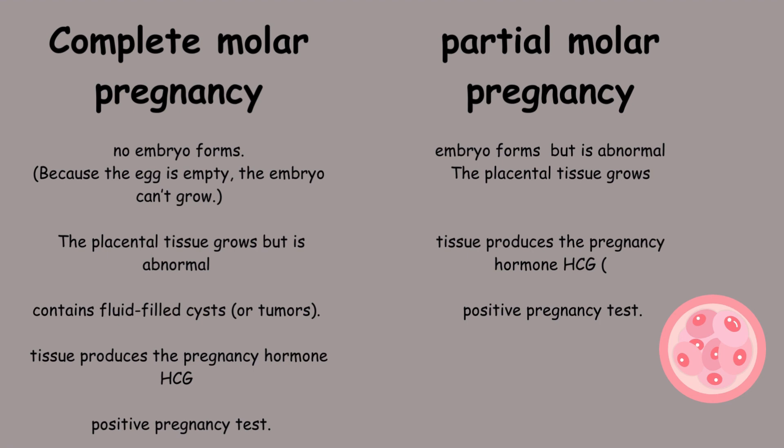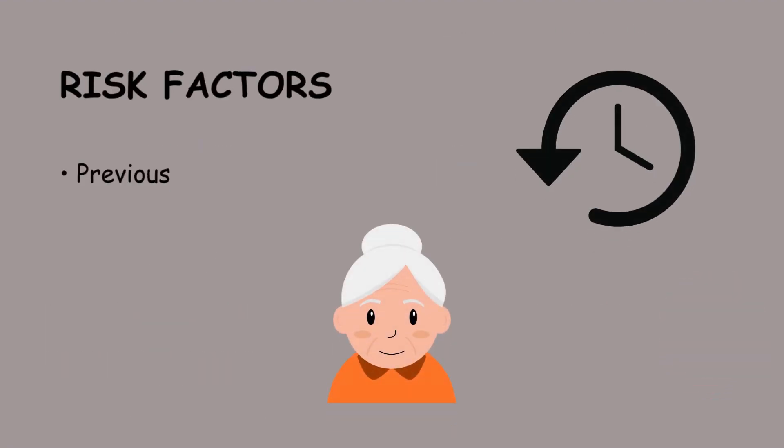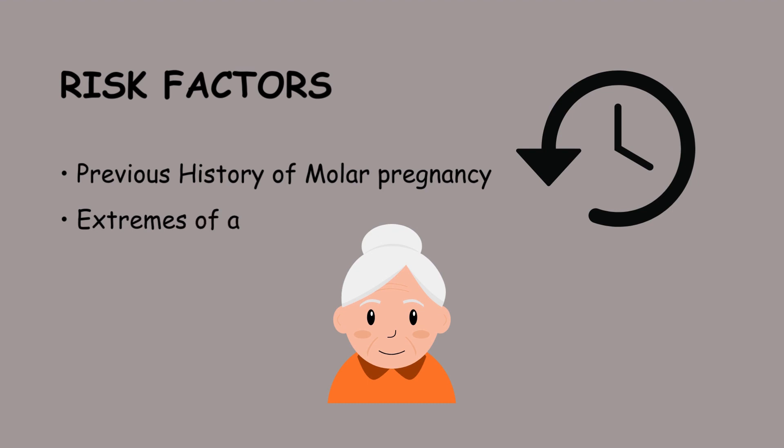In a partial molar pregnancy, an abnormal embryo forms, but it is not viable. Despite this, the placental tissue still grows. Additionally, the abnormal tissue produces the pregnancy hormone HCG, leading to a positive pregnancy test result. The risk factors for molar pregnancies include previous history of molar pregnancy and extremes of age.